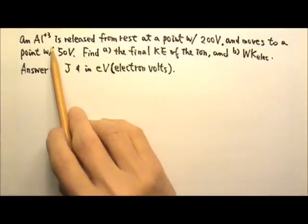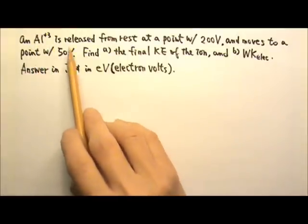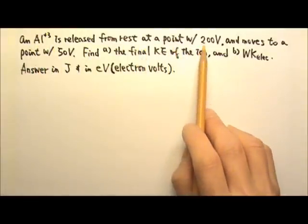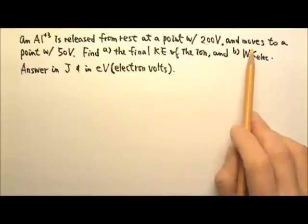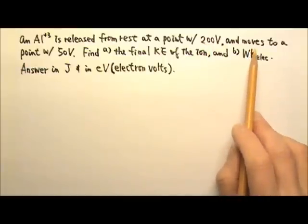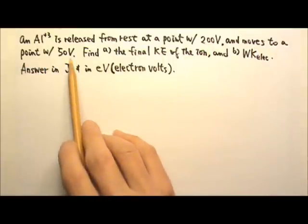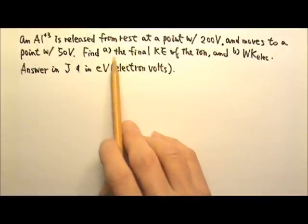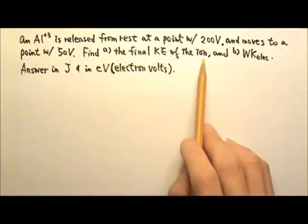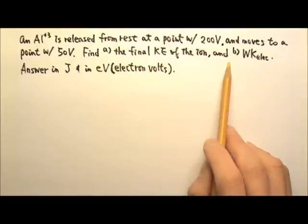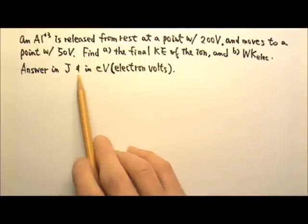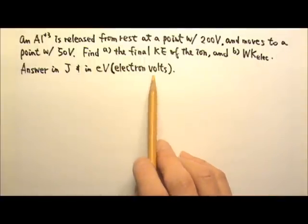An aluminum positive 3 ion is released from rest at a point with a 200 volt electric potential. It accelerates and moves to a point with a 50 volt electric potential. Find A, the final kinetic energy of the ion, and B, the work done by the electric field. Answer both in joules and in electron volts.